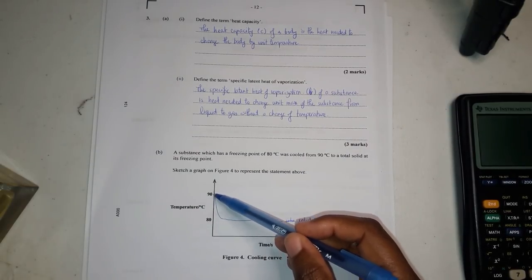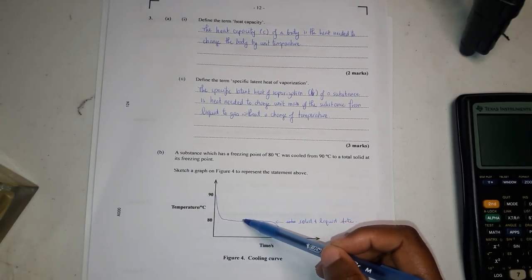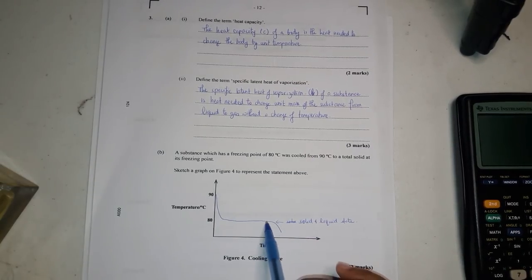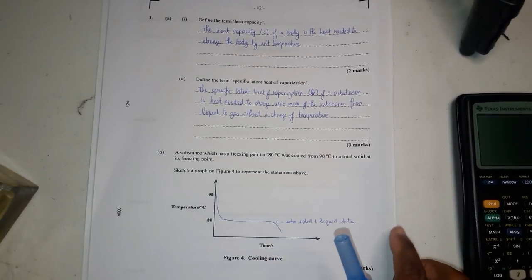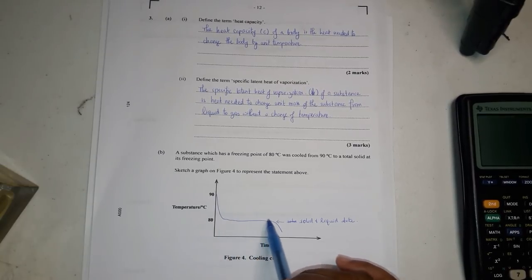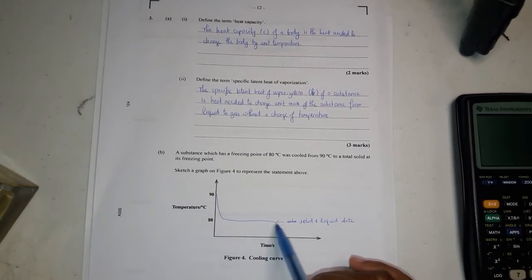So it's just going from 90, come down, plateau, come down again. And this area is the solid to liquid state existing. No heat is lost. This is where the latent heat exists.